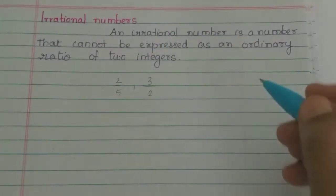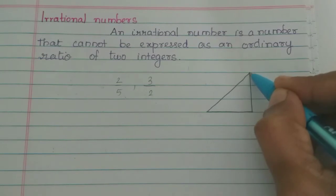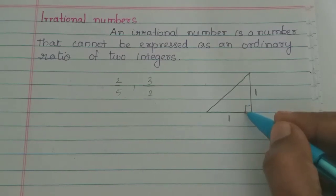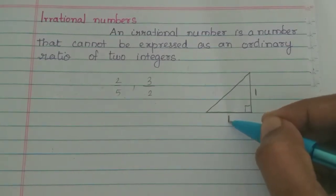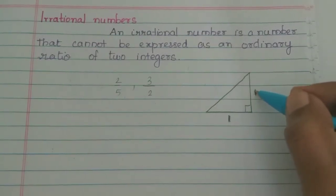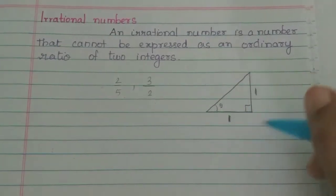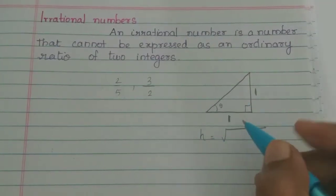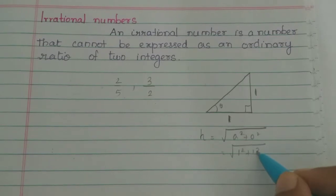For example, if you look at an isosceles triangle, two sides are equal. The base is the adjacent side of 1 and the opposite side is 1. Using the Pythagorean theorem, the hypotenuse is equal to the root of adjacent squared plus opposite squared. That is equal to 1 squared plus 1 squared, which equals 1 plus 1. That is equal to root 2.